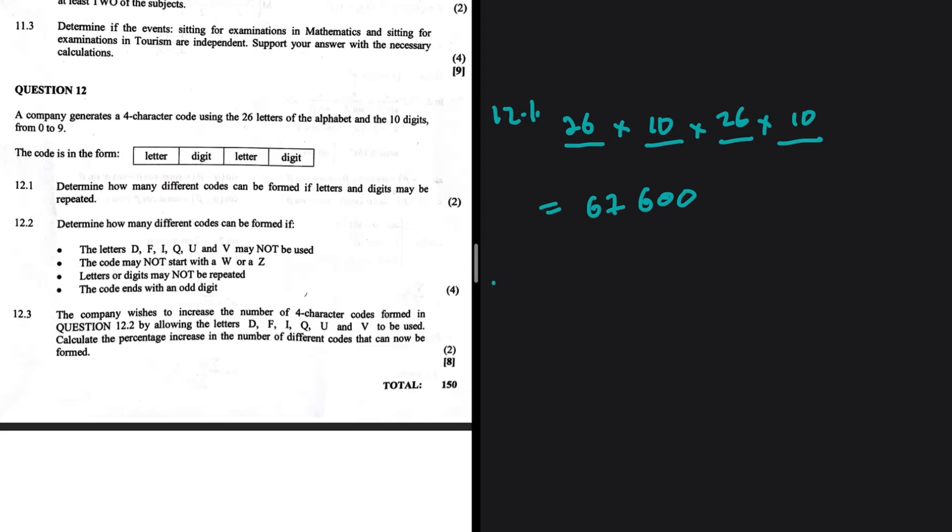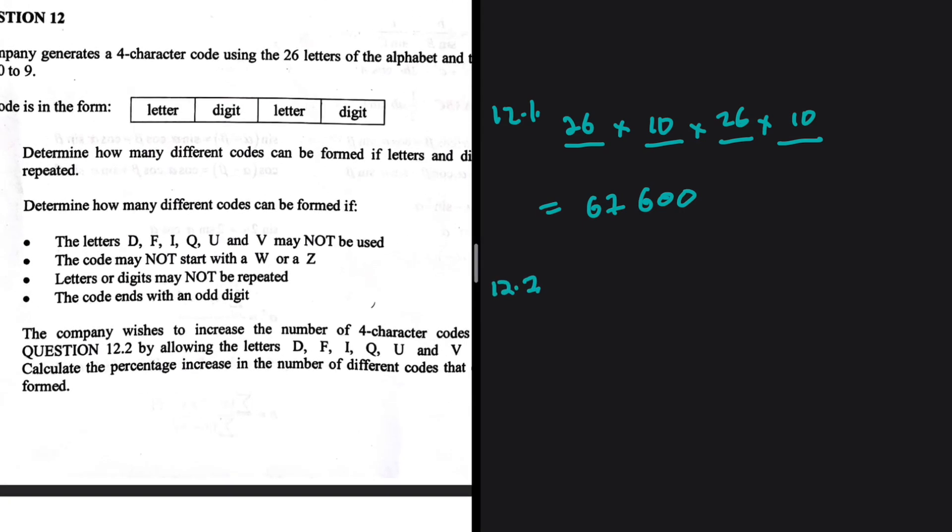Let's take a look at 12.2. Looks like we have some conditions here. Determine how many different codes can be formed if the letters D, F, I, Q, U, and V may not be used. So of the 26 letters, we are subtracting 1, 2, 3, 4, 5, 6 letters, and now we only have 20 letters.